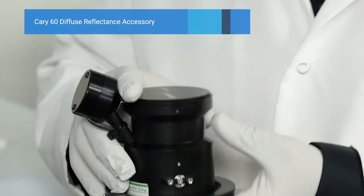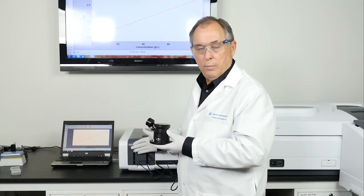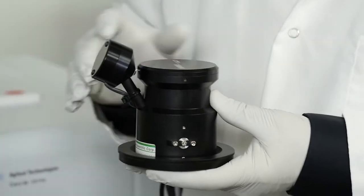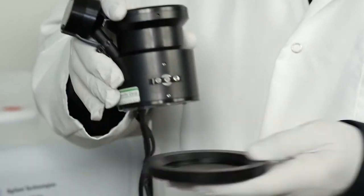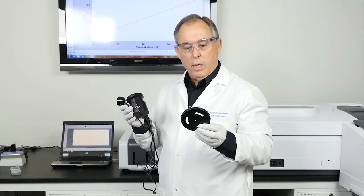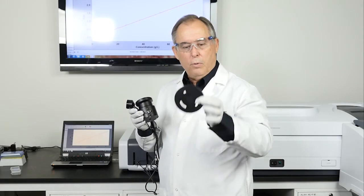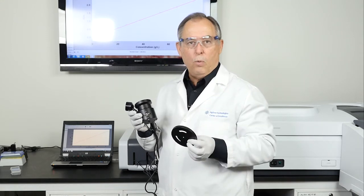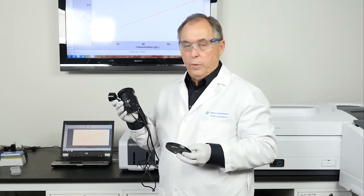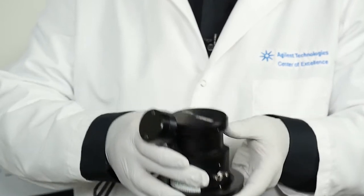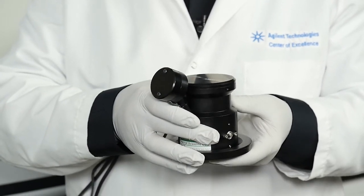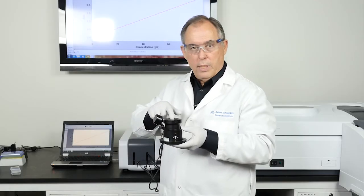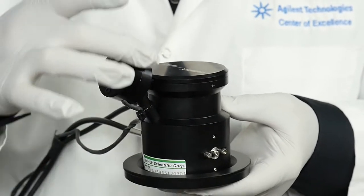This is the diffuse reflectance accessory. It hooks up to the optical system of the Cary 60. This is the alignment bracket, which we set the detector on. So we place this over the sample. The hole indicates where we are on the sample. And once we've done that, we simply put the diffuse reflectance accessory onto the bottom bracket. This is the detector, and this is the camera that will take a picture of it.